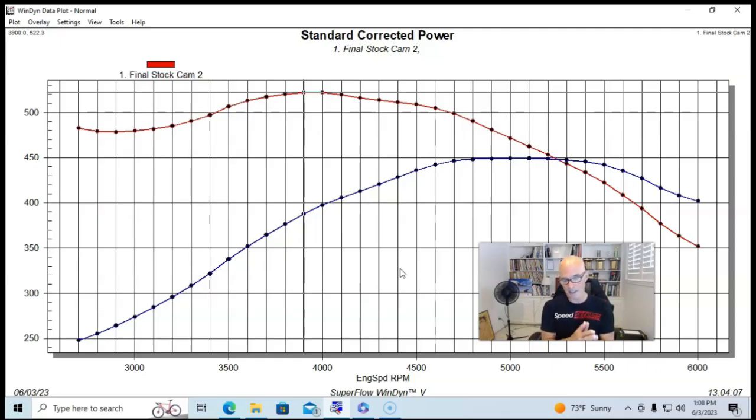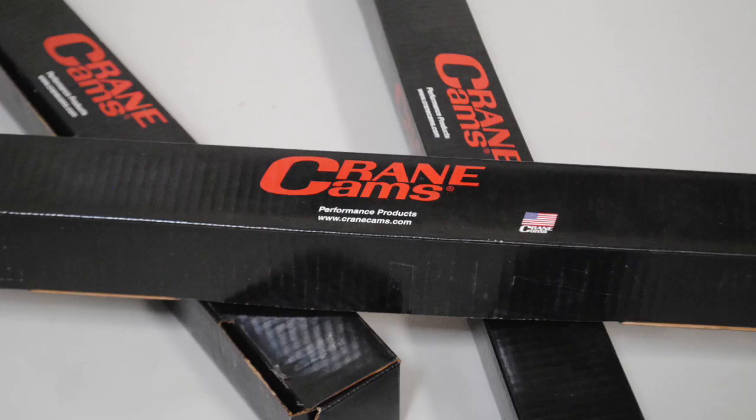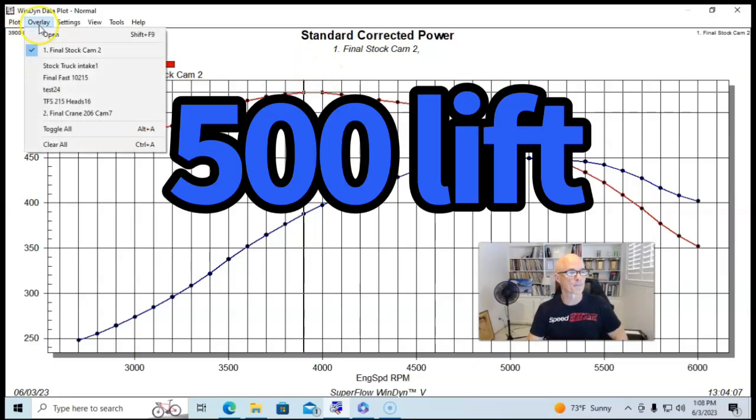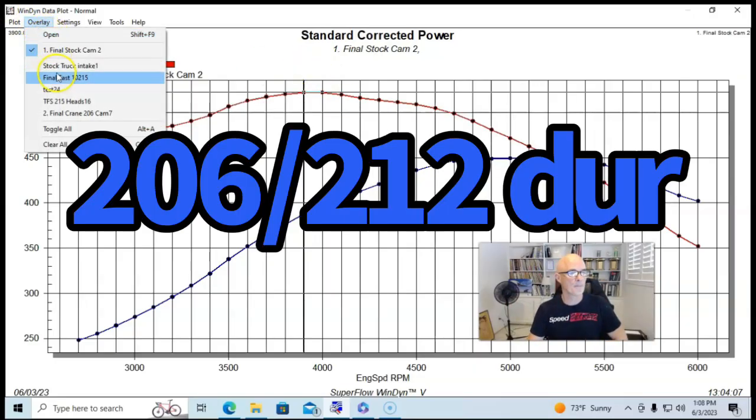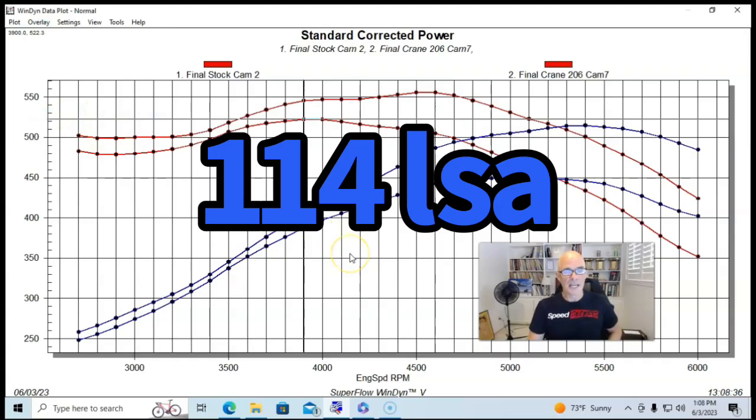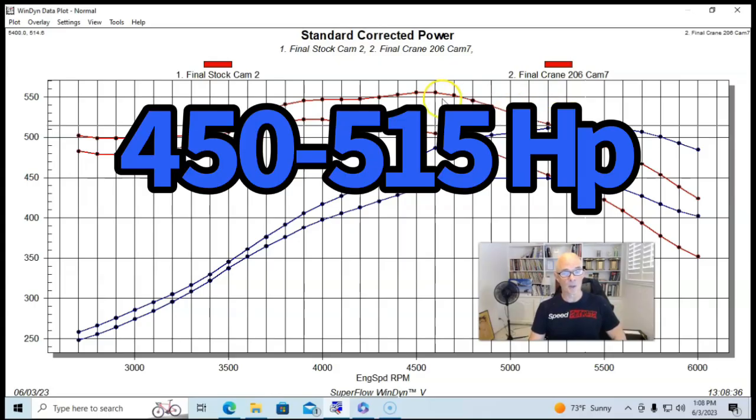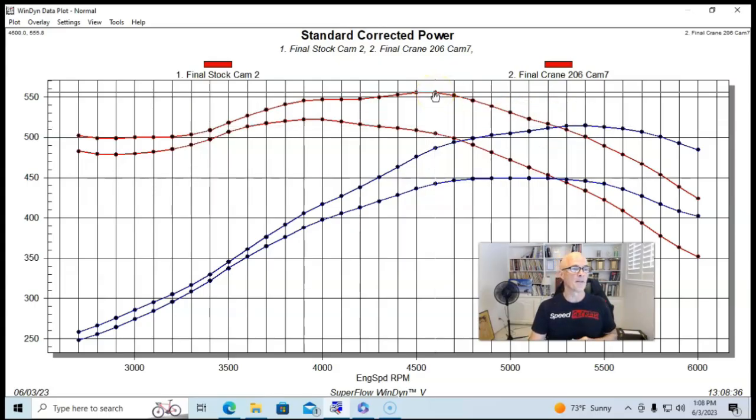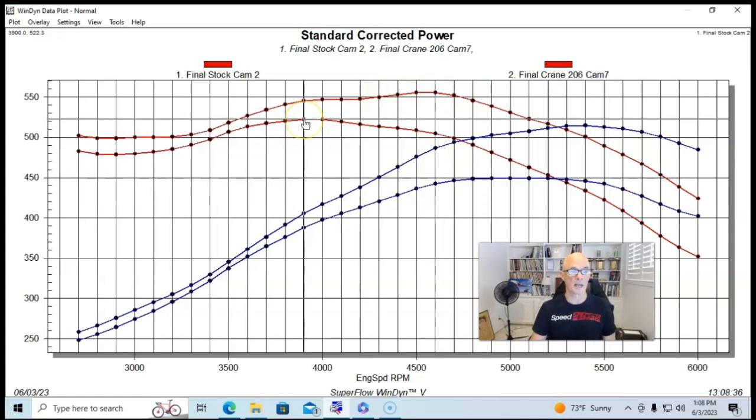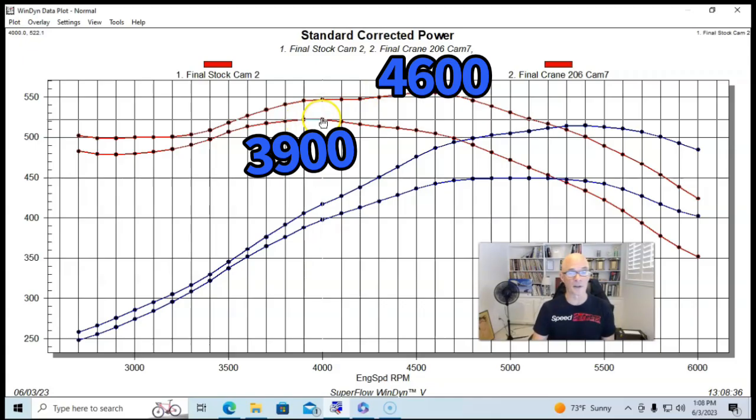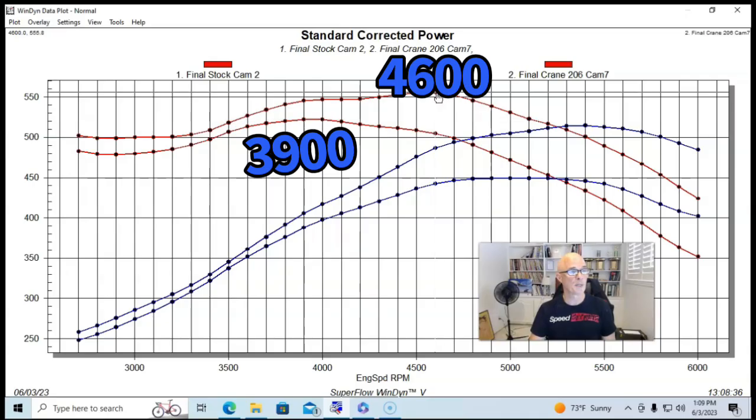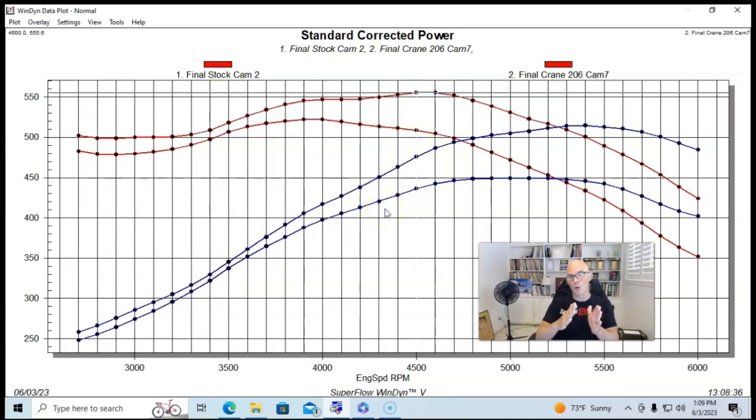So the first camshaft that we put in this basically was a Crane version of what we would call a stage one truck camshaft. So let's take a look at that. So you can see we got good gains here. Not only did we get more peak power with our camshaft, we get 515 horsepower. We also got a good bit more peak torque, 556 foot-pounds of torque. But the peak occurred later. So the peak with the stock cams occurred at 3900 RPM, 3900 or 4000. And then with this smaller 206 stage one truck cam, it pushed peak power all the way out to 4600 RPM.